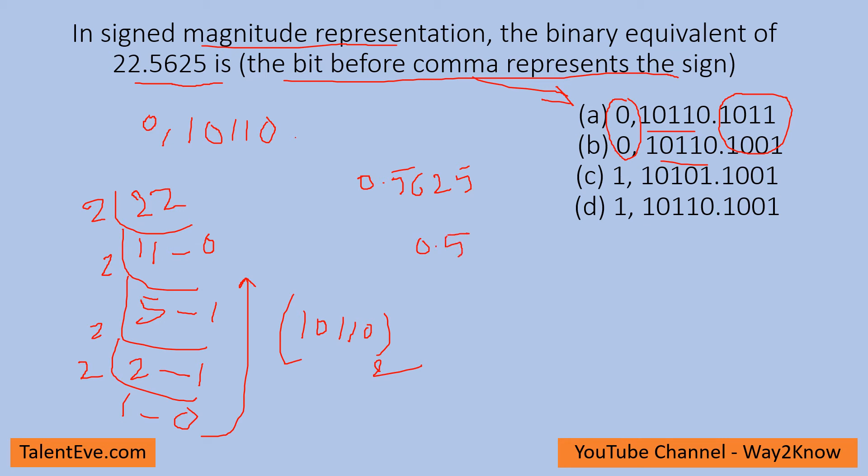We will start multiplying this number with 2. When you multiply 0.5625 with 2 initially, you get 1.125. So negate this one and take 0.125 and then multiply by 2 again, you get 0.25. Here you cannot negate 1, so you take 0.25. You have to do this until you eliminate all the decimal numbers after the dot.